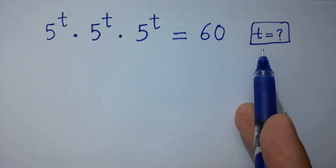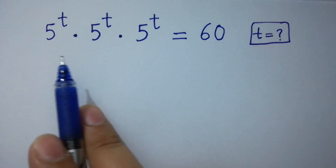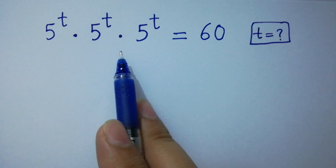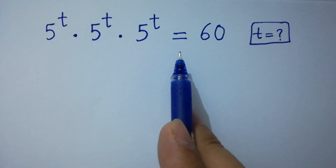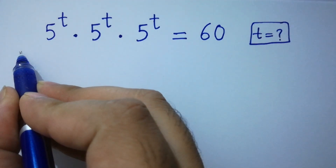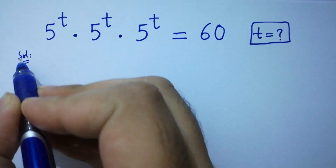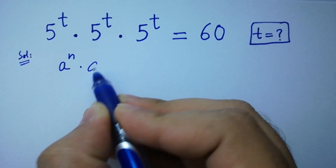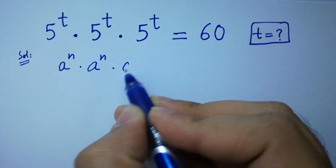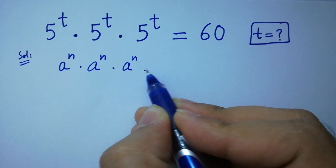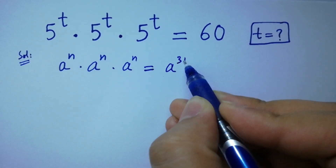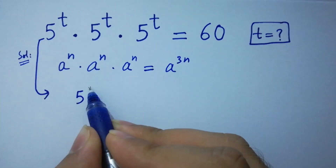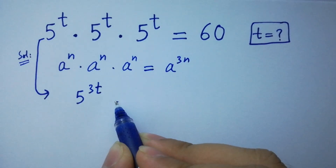Hello friends, find the value of t if 5 to the power t times 5 to the power t times 5 to the power t equals 60. As we know, a to the power n times a to the power n times a to the power n equals a to the power 3n. Then it will be 5 to the power 3t equal to 60.